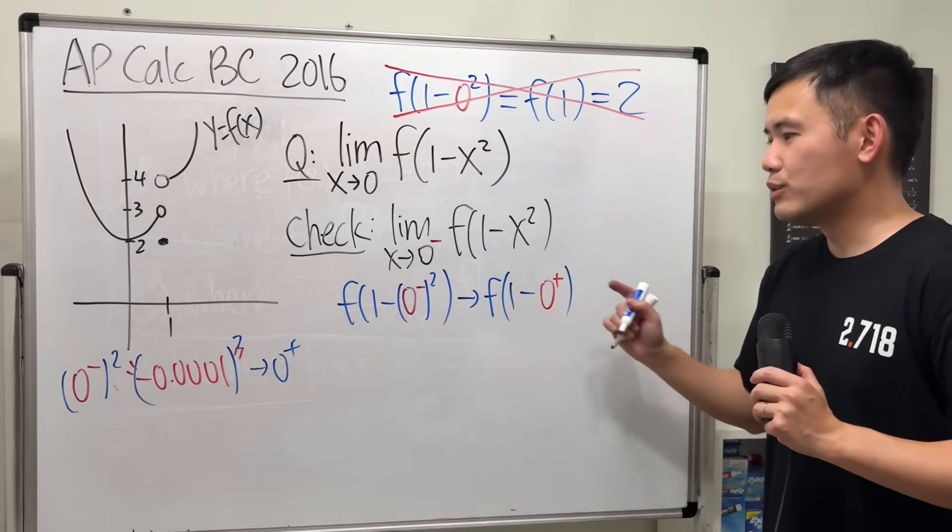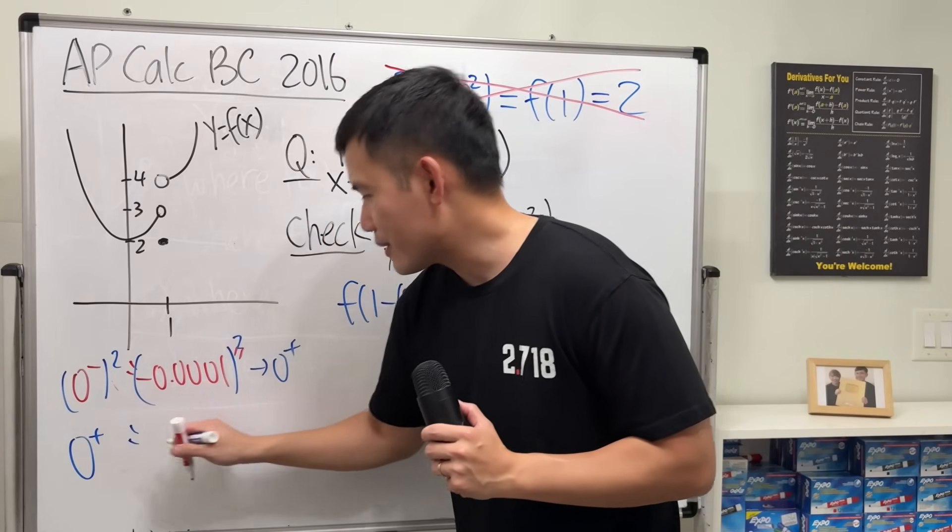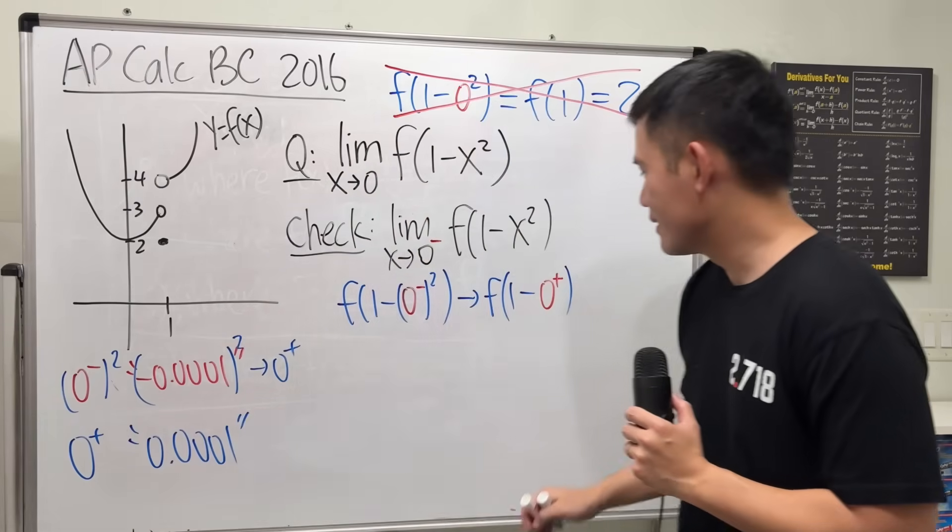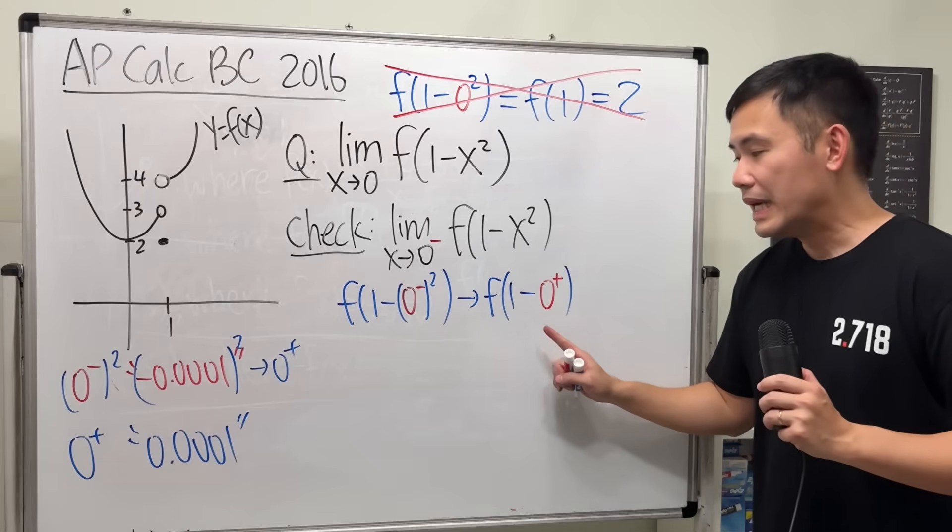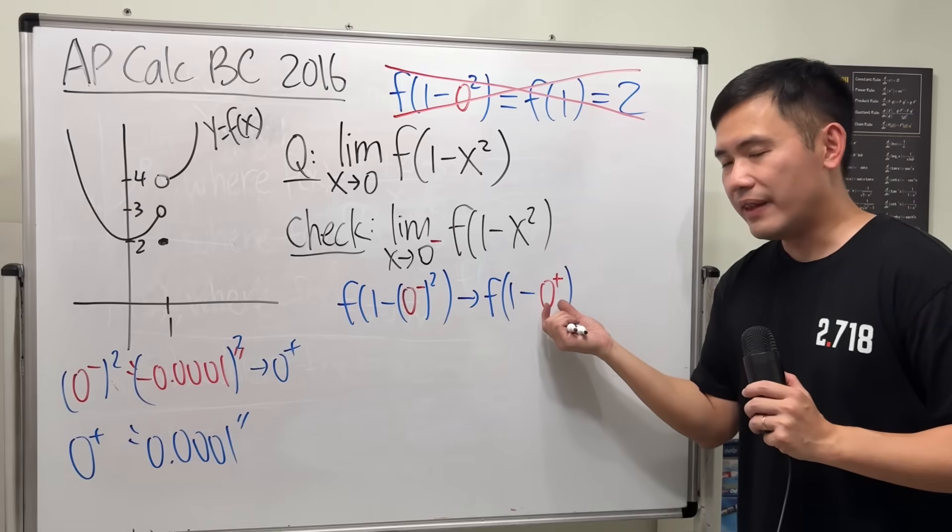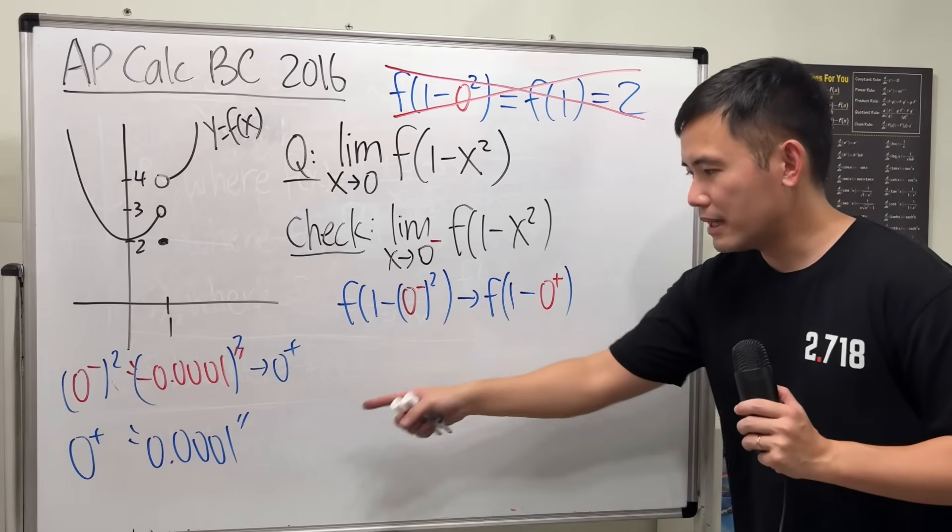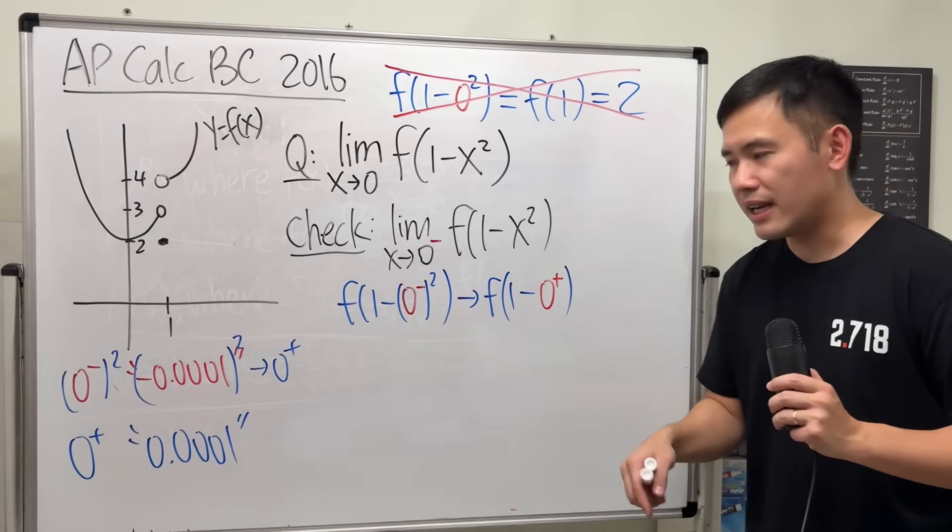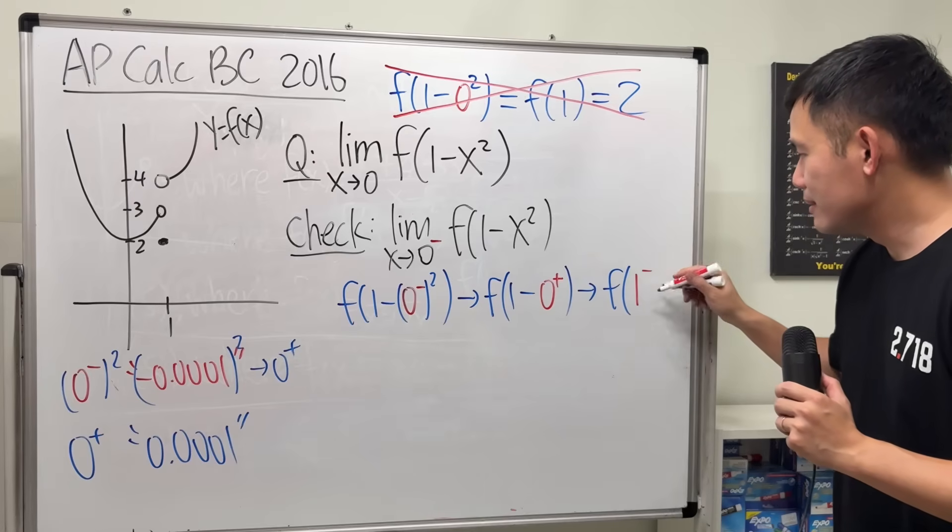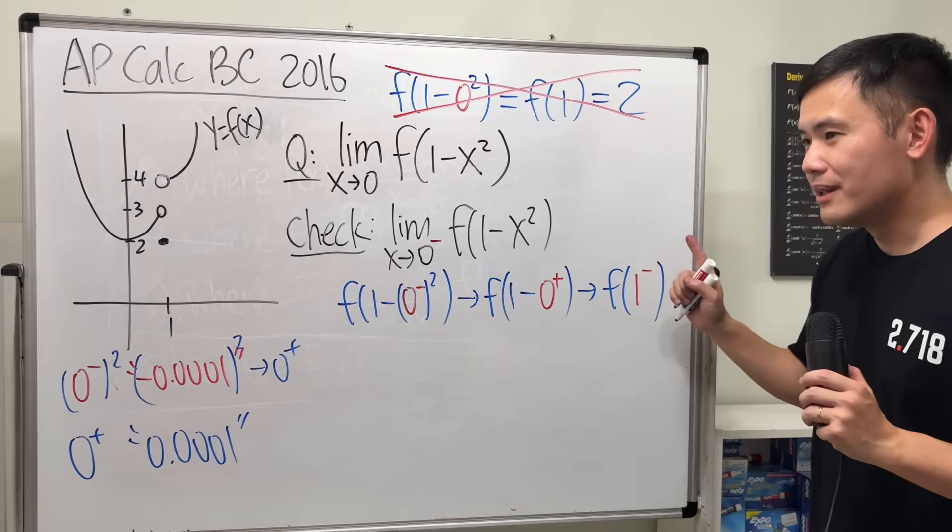Now, what is 1-0⁺ though? Well, 0⁺, just think about this as a number that's a little bit bigger than 0. So, that's like 0.0001. If you have 1 minus 0, again, this is technically a number that's a little bit bigger than 0. Just think about this as 1 minus 0.0001. It's at 0.99999. This is going to be f(1⁻), meaning a number a little bit less than 1.